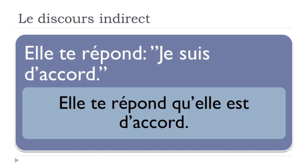If we want to transpose this first structure into discours indirect, it's quite simple — you just need to put back all your elements. 'Elle te répond' doesn't change. Then 'que' — that's the key thing of discours indirect — but the E needs to go away because we've got a vowel after, so 'qu'elle'. And 'je' will have to be transposed to 'elle', because the subject here is 'elle'. The verb is changing as well, but it's actually quite simple because in the first structure it's the present form, and here it's the present form too. So no big changes — you put back all your elements, modify them if necessary, and that's it.